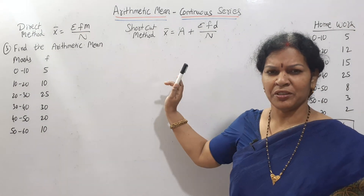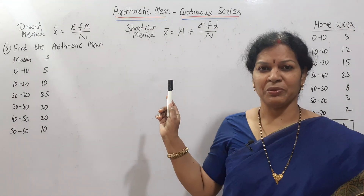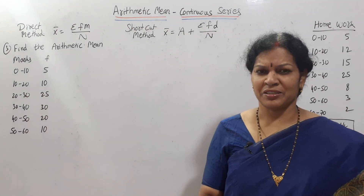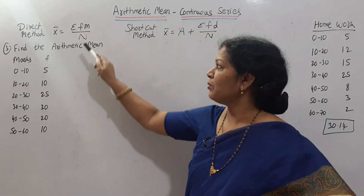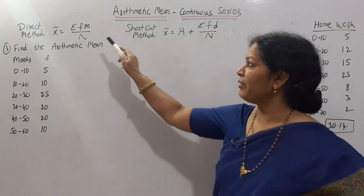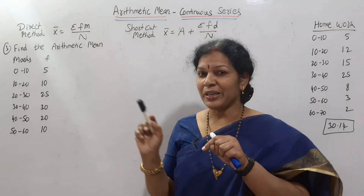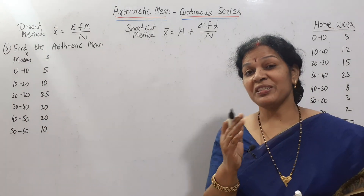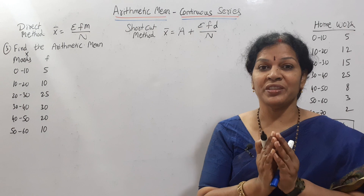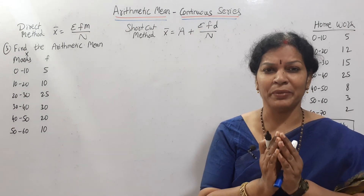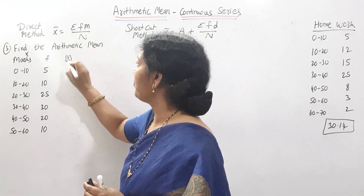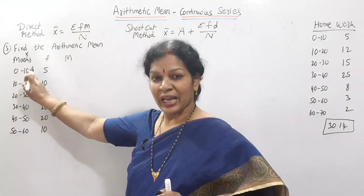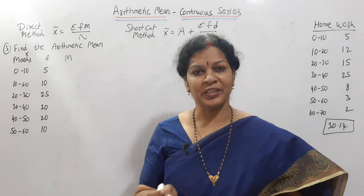We will implement both formulas in this problem. Find the arithmetic mean — what is given to us? Marks and frequency. Marks is X and frequency. As per the formula X̄ = σfm / n, x here represents mid-value of the class interval. We can call it m — mid-value or mid-point of x.